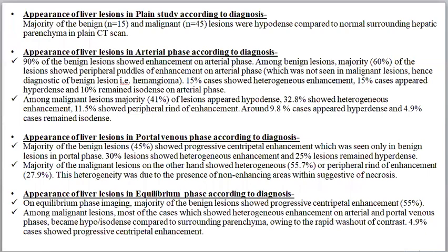On arterial phase, 90% of benign lesions showed enhancement, and among these, 60% showed peripheral puddles of enhancement. Among malignant lesions, 41% appeared hypodense, 32.8% showed heterogeneous enhancement, 11.5% showed peripheral rind-up enhancement, 9.8% appeared hyperdense, and 4.9% remained isodense to the liver. On portal venous phase, most benign lesions showed progressive centripetal filling, while 30% showed heterogeneous enhancement and 25% remained hyperdense. The majority of malignant lesions showed heterogeneous or peripheral rind-up enhancement, with the heterogeneity due to non-enhancing areas suggesting necrosis.